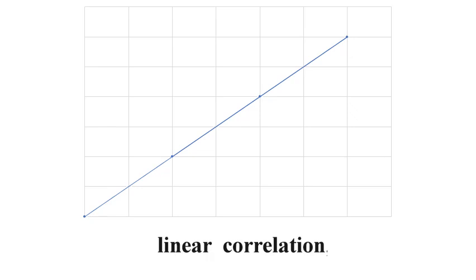If two correlated variables are plotted on a graph and all the points form a single straight line, then the correlation is called a linear correlation. Linear means a straight line, so when we plot all points of the two correlated variables on a graph paper and get a straight line, we call it linear correlation.